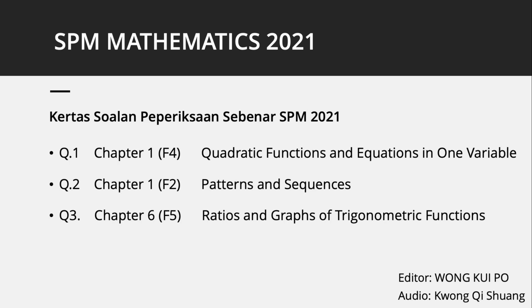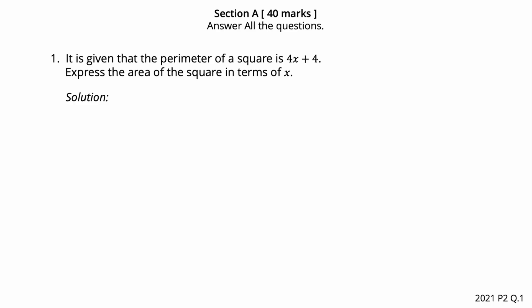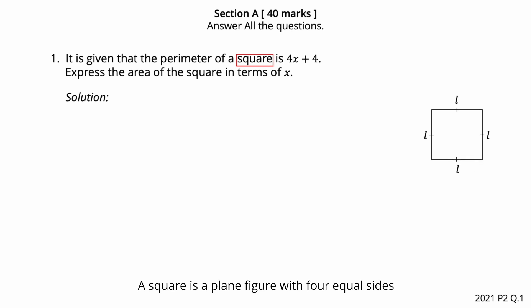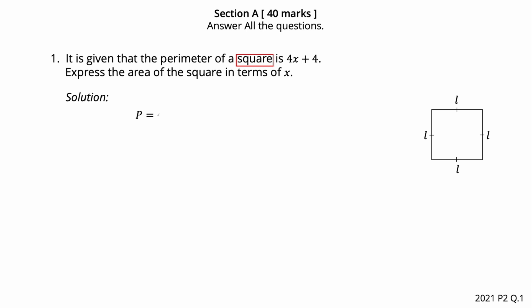Question number one: it is given that the perimeter of a square is 4x plus 4. A square is a plane figure with four equal sides. The perimeter of a square is the sum of its four sides: P equals 4L. Since the perimeter is 4x plus 4, we have 4x plus 4 equals 4L.